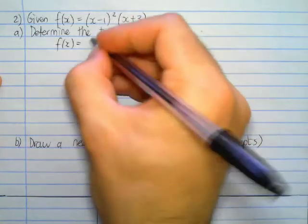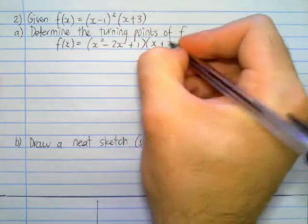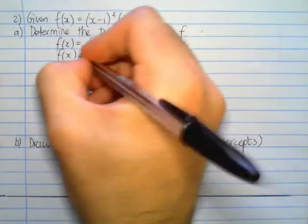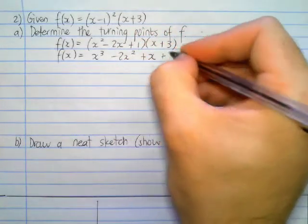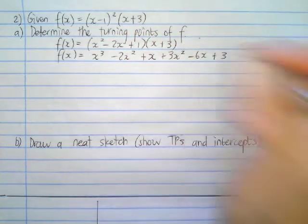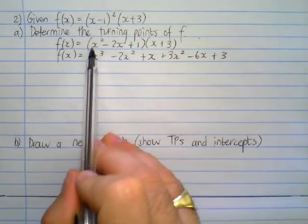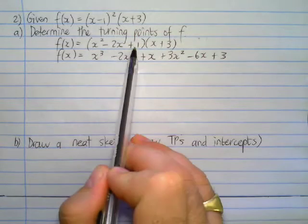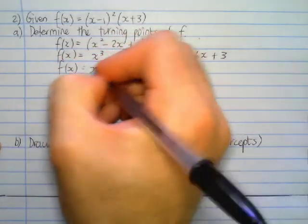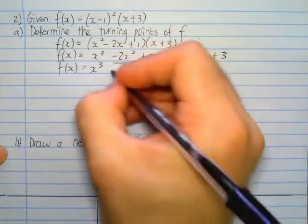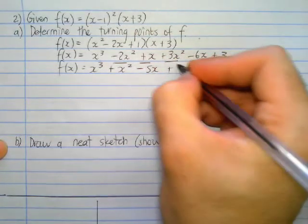So (x-1)² would be x² - 2x + 1, then times by (x+3). If we now times by the x+3, we're going to have x³ - 2x² + x and then plus 3x² - 6x + 3. Now let's clean it up. x³ - 2x² + 3x² is plus x², plus x - 6x is - 5x and plus 3.